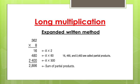16, 480, 2,400 are called the partial product. To find out the final answer you have to add these all partial products together. 16 plus 480 plus 2400. It is 2,896.